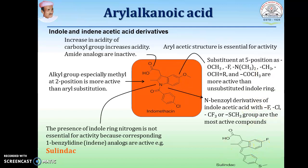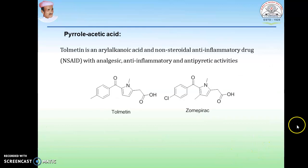Sulindac is the example. Pyrrolizidine acetic acid derivatives include tolmetin and zomepirac.